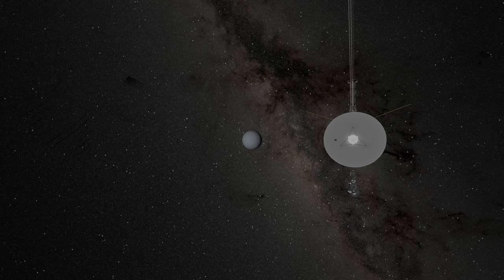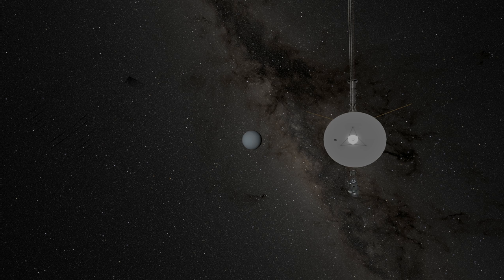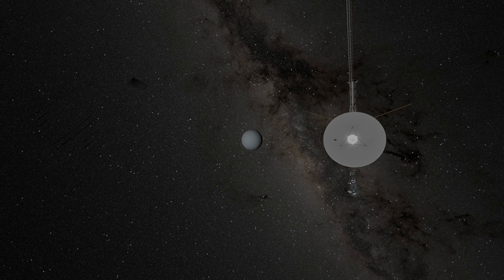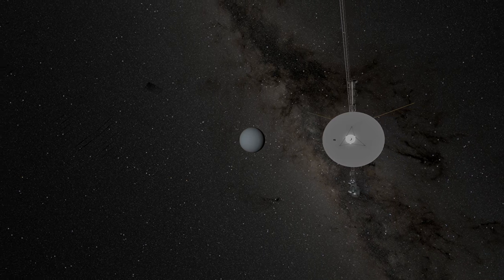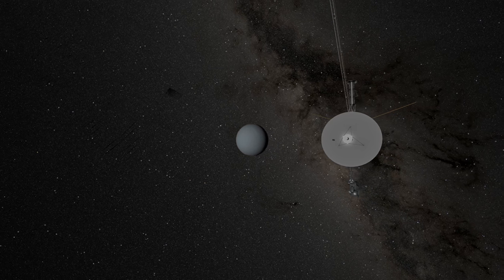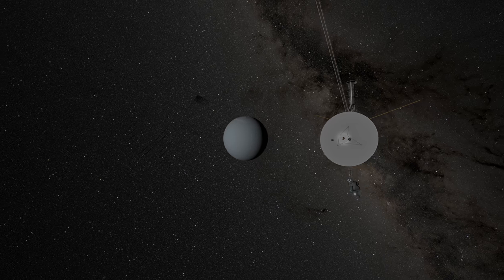In January 1986, Voyager 2 encountered Uranus. At 3 billion kilometers away from the Sun, sunlight takes 2 hours and 46 minutes to reach Uranus.